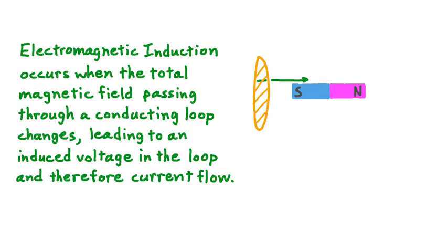We can write out a statement of what electromagnetic induction is. Electromagnetic induction occurs when the total magnetic field that's passing through a conducting loop changes, and this leads to an induced voltage in the loop and therefore current flow in the loop. Based on this definition, we see that there are actually two parameters that we could change in any given scenario to induce voltage and therefore current.